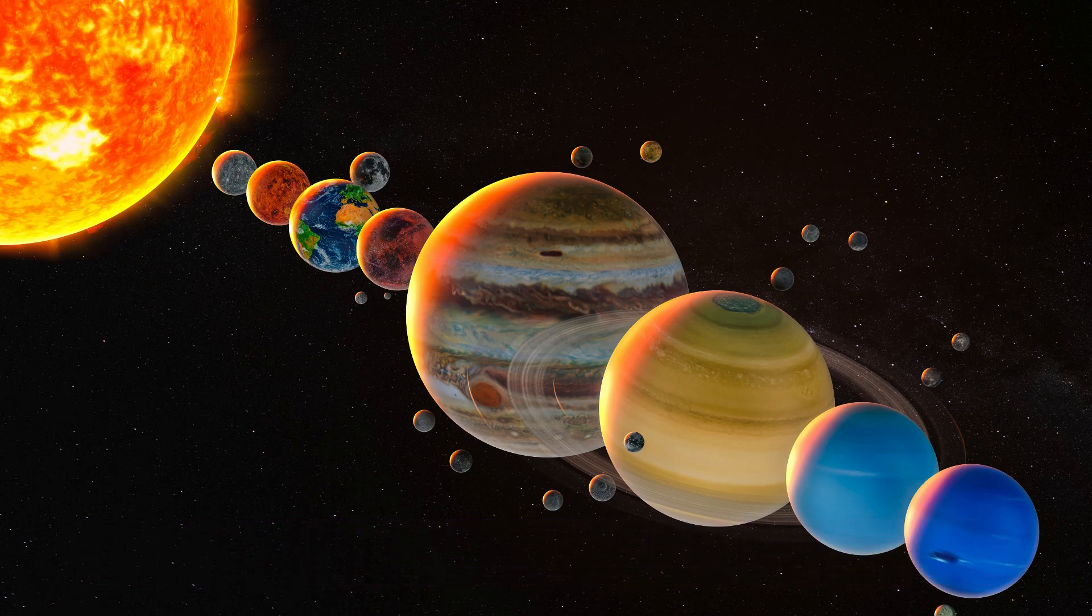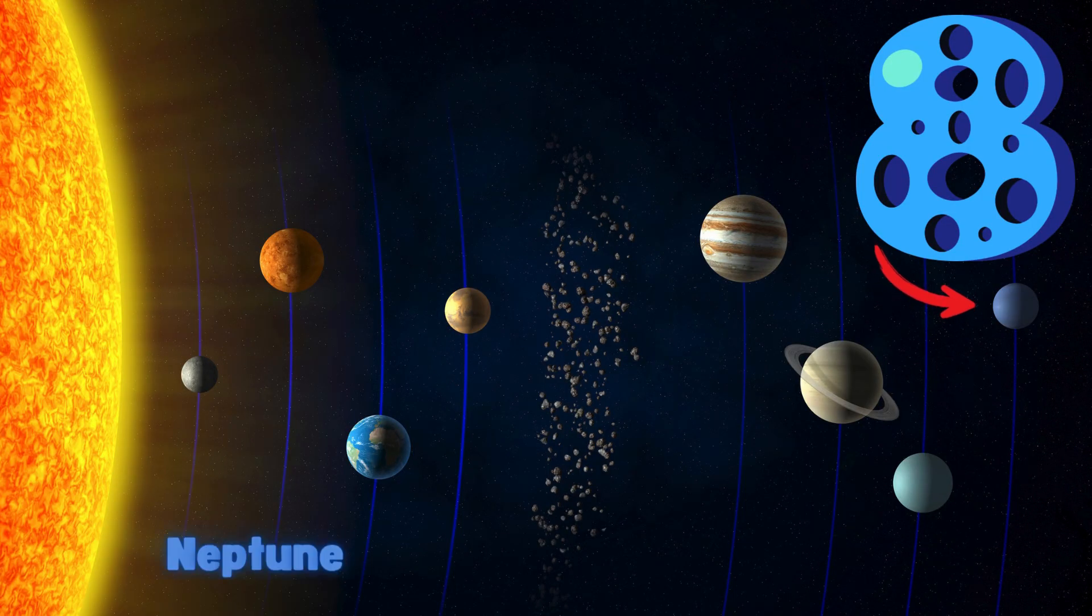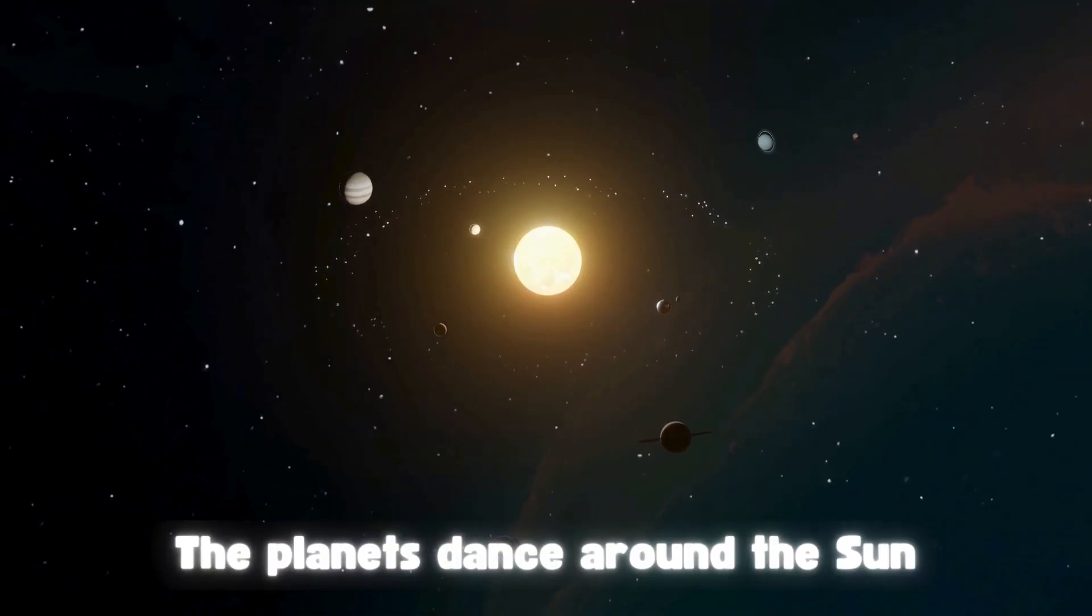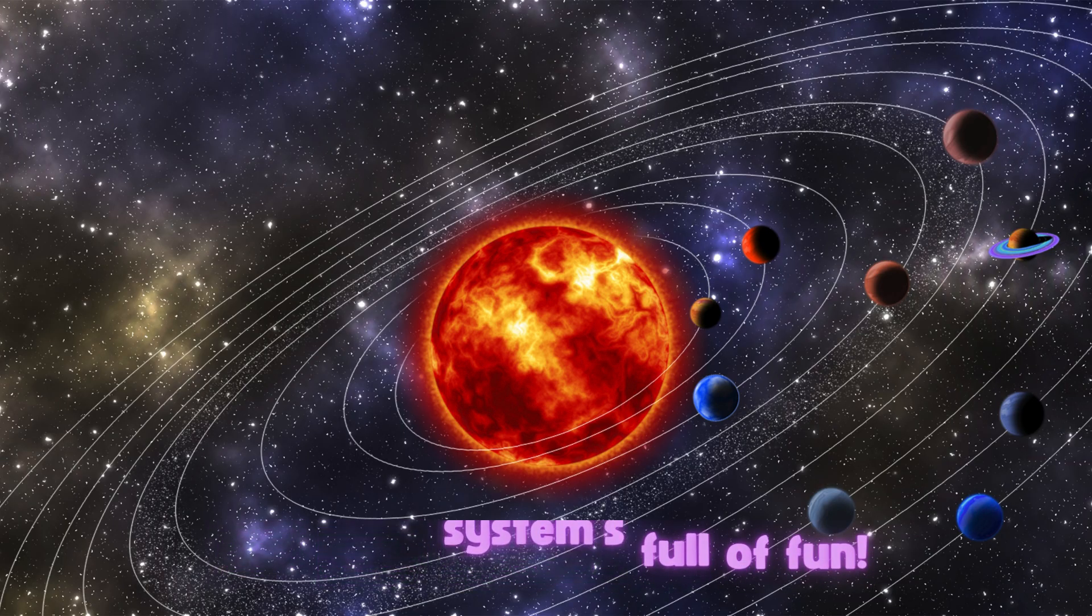Come on, let's try. Uranus is seventh, it's icy blue. Neptune is eighth, the farthest two. The planets dance around the sun. Our solar system's full of fun.